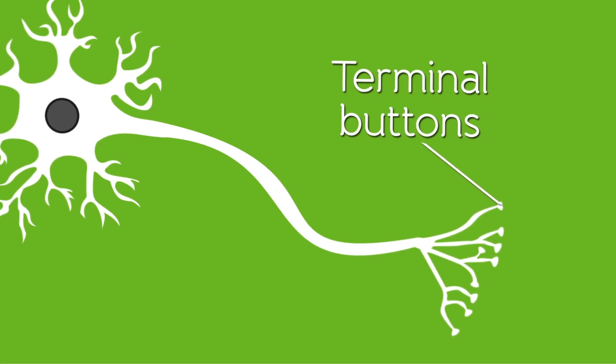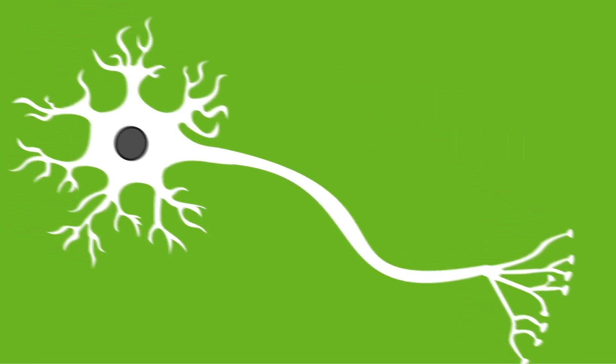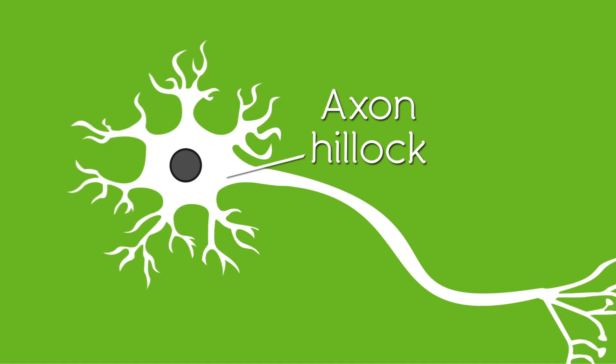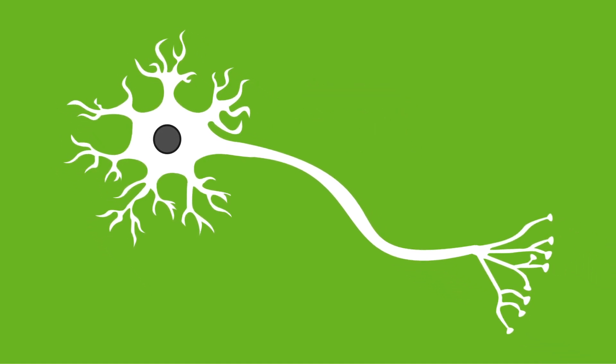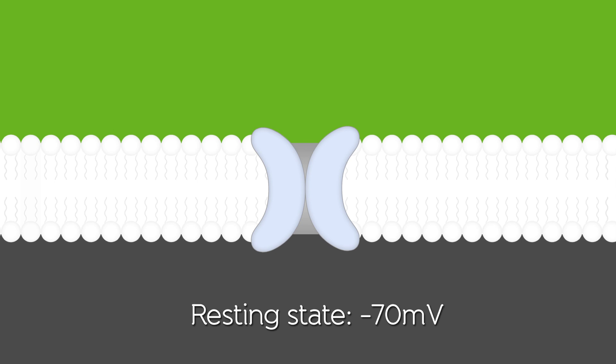The part where the cell body connects with the axon is termed the axon hillock. Each neuron holds an electrical charge. When a neuron is in a resting state, the charge is about minus 70 millivolts. This is mainly due to the difference in concentration of ions, essentially positively or negatively charged particles, inside and outside the cell.